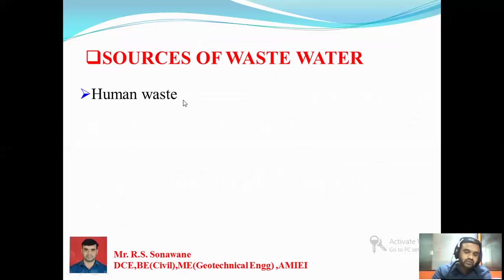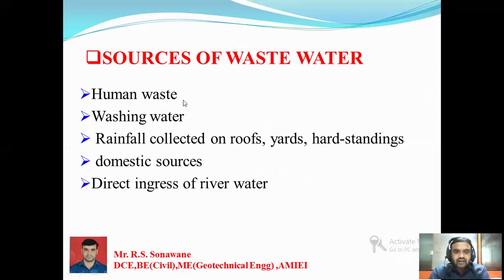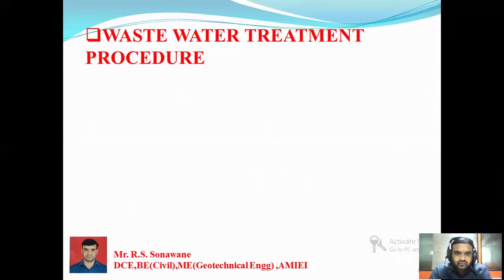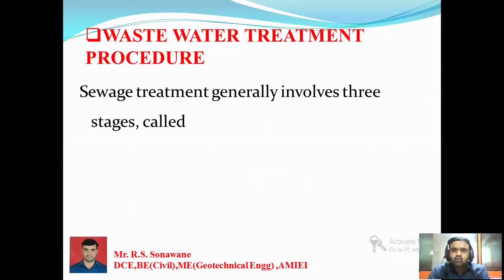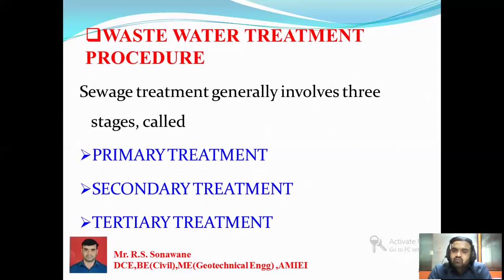The sources of sewage water include: first, human waste; second, washing water and rainfall collected on rooftops; third, domestic sources; and also direct river water, highway drainage, and industrial waste. These are the sources which can generate wastewater. The sewage treatment process generally involves three stages: primary treatment, secondary treatment, and tertiary treatment — these are the stages involved in a sewage treatment plant.